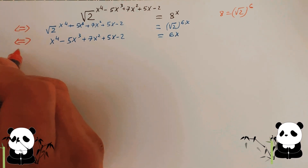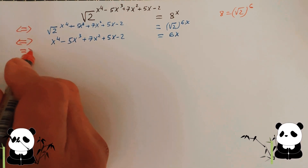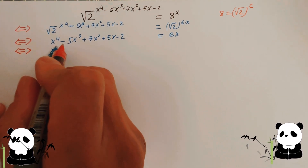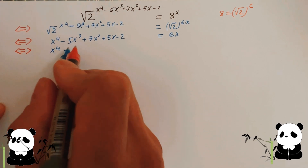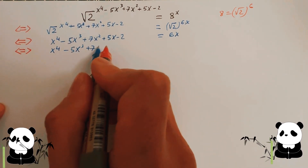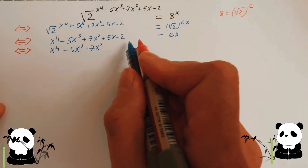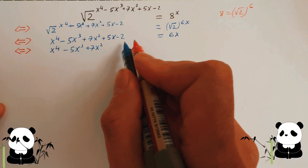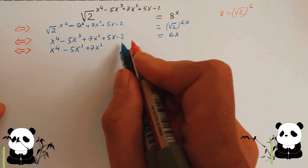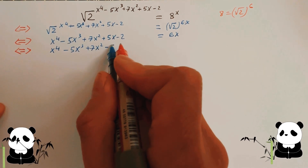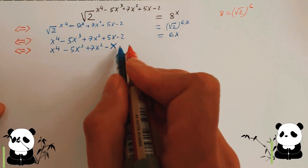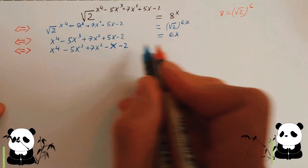Now move 6x from the right to the left hand side. We get five x cubed plus seven x squared, and moving 6x from right to left it becomes negative x, giving us negative x plus five x, which becomes negative x, take away two, equal zero.